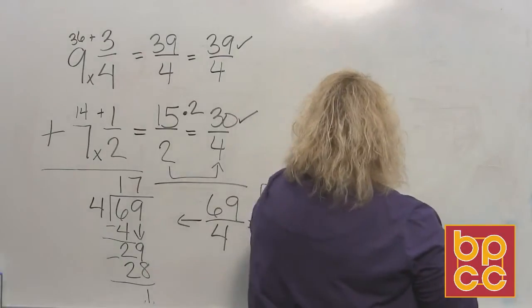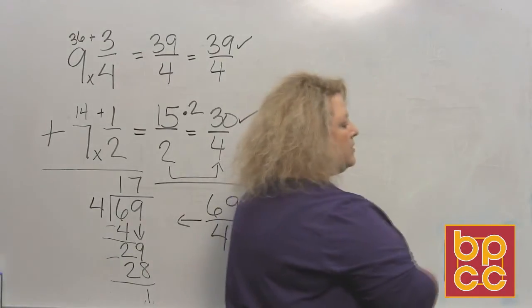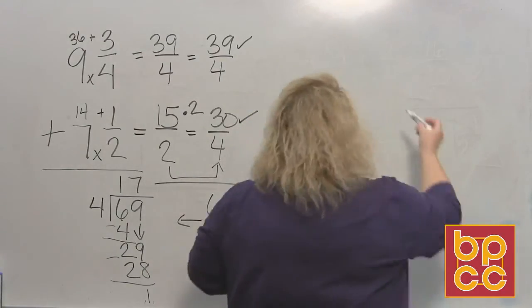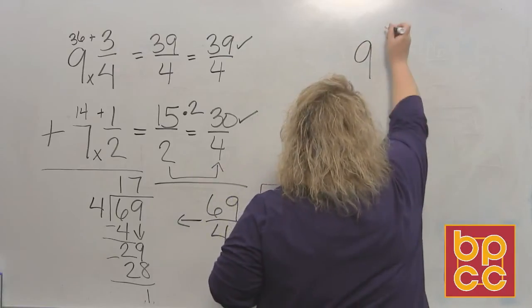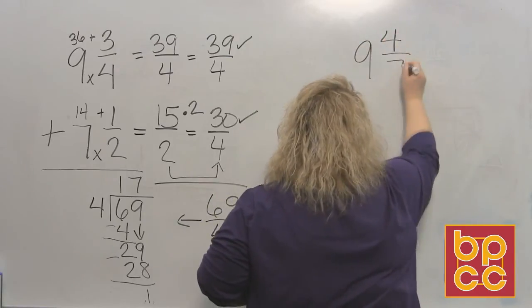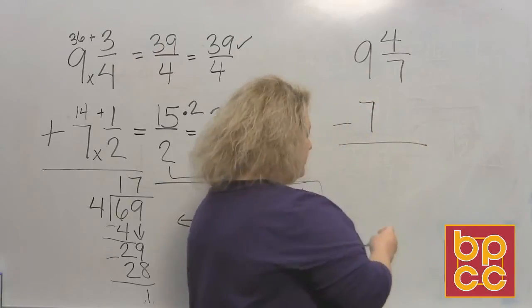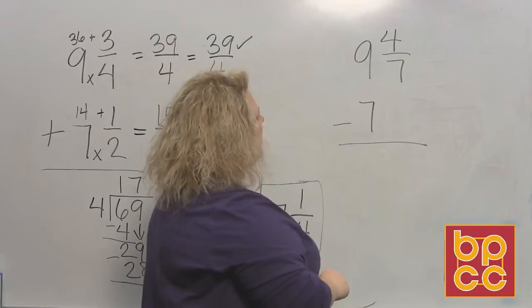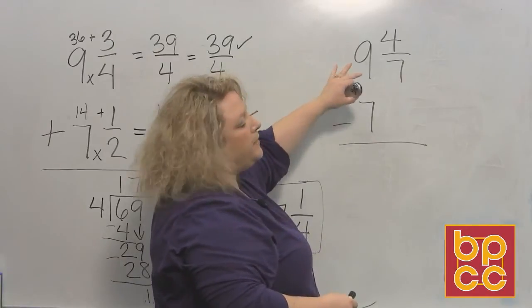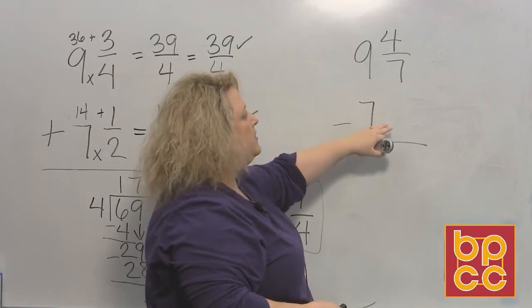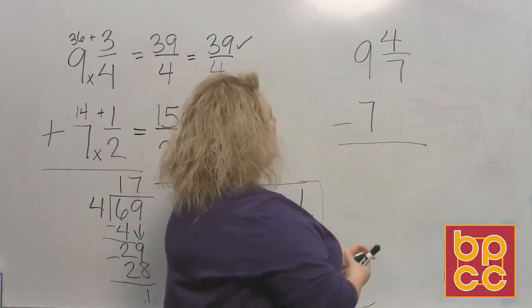Now the next thing we're going to do is subtraction. I'm going to erase this and start with a subtraction problem. You have 9 and four-sevenths minus the whole number 7. So we're going to do a couple of different problems on this one. You'll notice that there's a fraction at the top this time instead of at the bottom, because when you're subtracting, remember what's on top you take away what's on bottom.